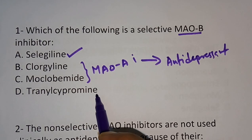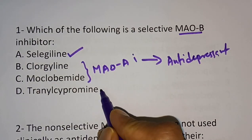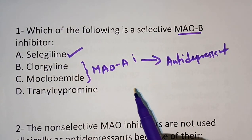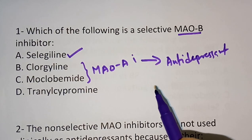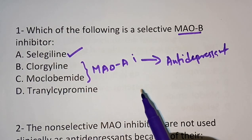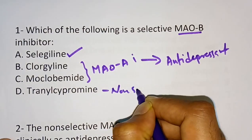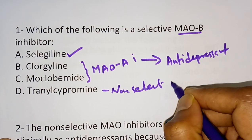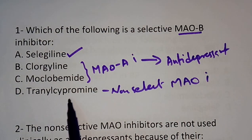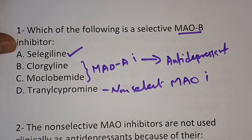What is Tranylcypromine? Tranylcypromine is a non-selective MAO inhibitor — it is not specific for MAO-B or MAO-A. It is a non-selective MAO inhibitor.